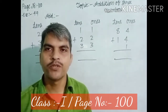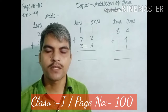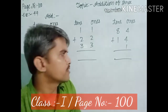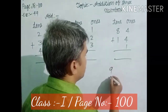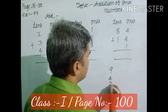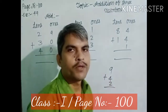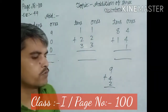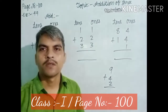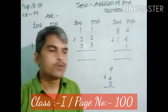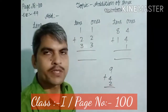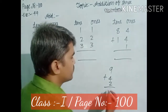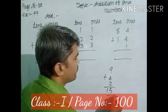In the previous video, we discussed about additions of three numbers — such type of questions. Dear students, you remember such type questions. We discussed: 4 plus 6 is 9, plus 15. You write in this way: 15.